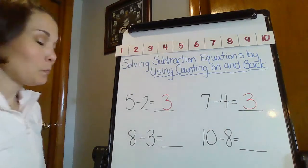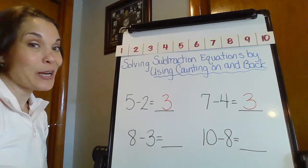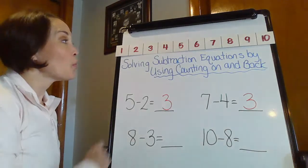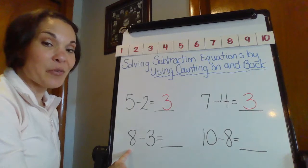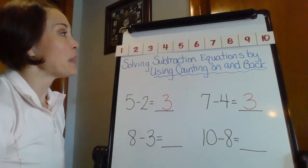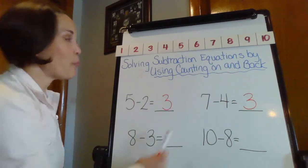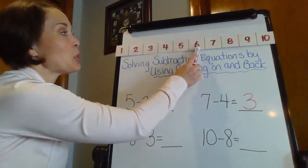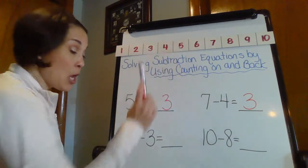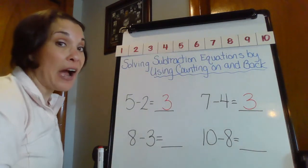So eight take away three. Here we go. Eight minus three. So counting back, I am going to start on my big number, my whole number, count back three, one, two, three. Okay. So my difference should be five.